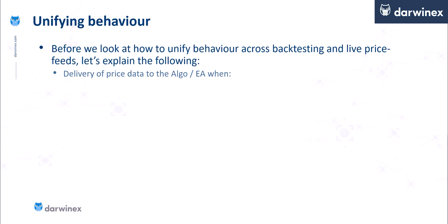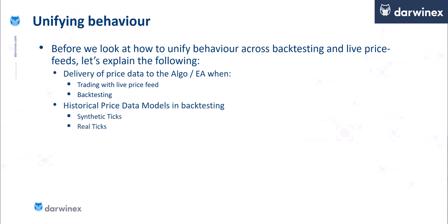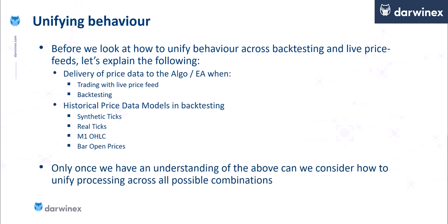The first is the delivery of price data to the algo, and this of course is different in a live context compared with backtesting. The second thing we need an understanding of are the price data models used in backtesting: synthetic ticks, real ticks, M1 open high low close bars, and bar open prices — the four models provided within the MT5 strategy tester. Only once we have an understanding of both of these can we consider how to unify the processing across all possible combinations.